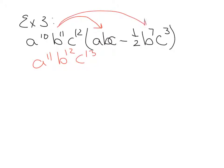Then we're going to multiply that monomial times the second monomial. The coefficients first: 1 times negative 1.5 makes negative 1.5. So we have negative 1.5, then a10 because there's a10 here but no a's in this term. Then we add the b's: b11 times b7 makes b18. And then the c's: c12 times c3 makes c15.